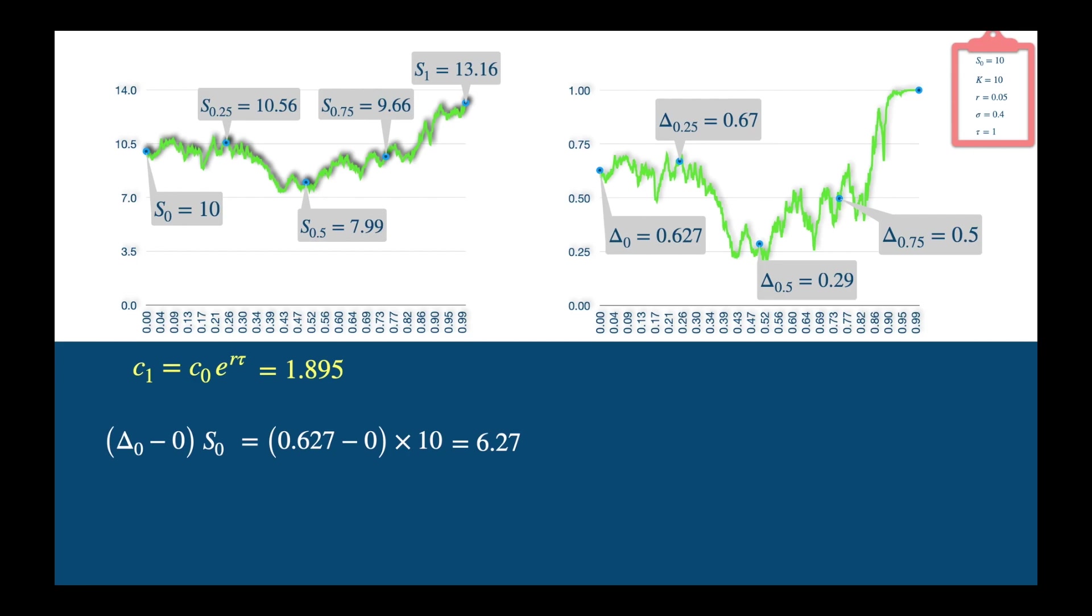Where do we get the money from? Of course the generous bank, so we borrow this amount by the option maturity, which is 1 year from now. It would have grown at the risk free rate. We know R is 5%, so at maturity we will have to pay this amount, which is 6.59, and we get ownership of 0.627 units of the stock.